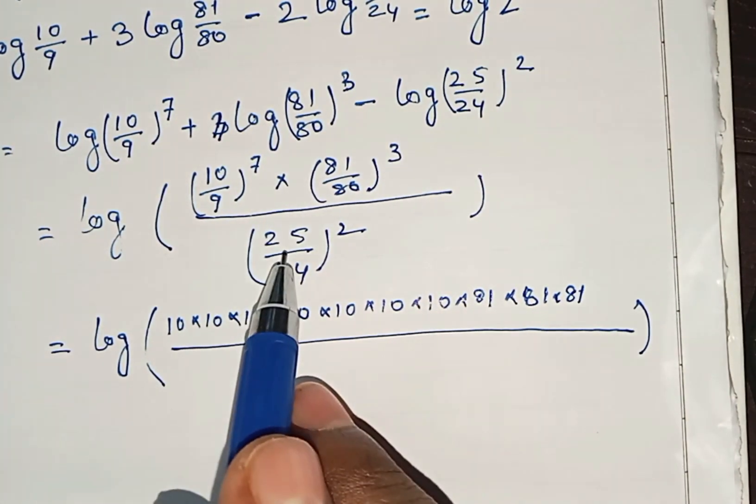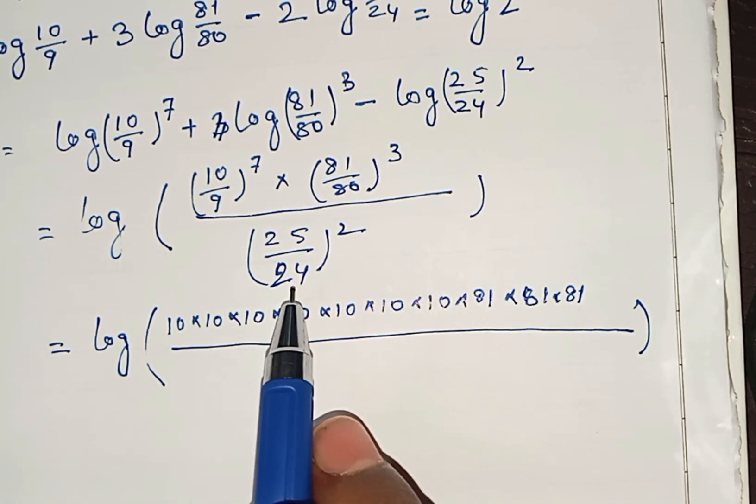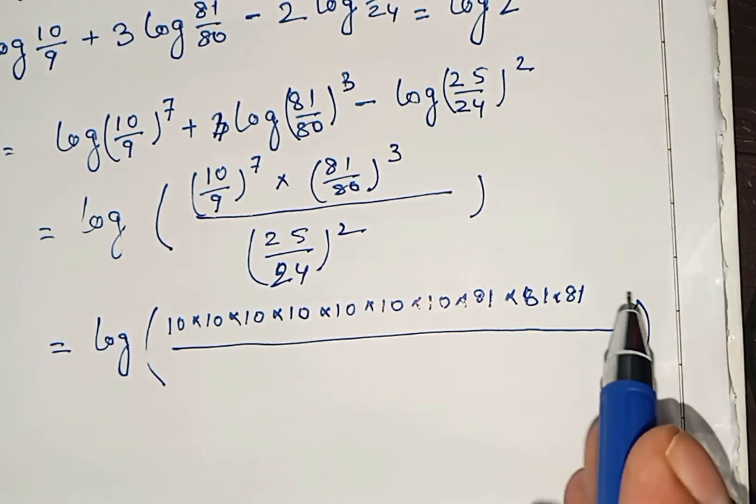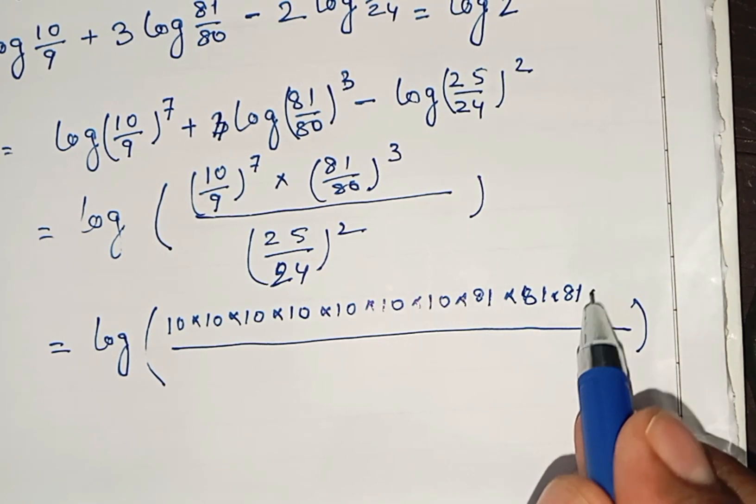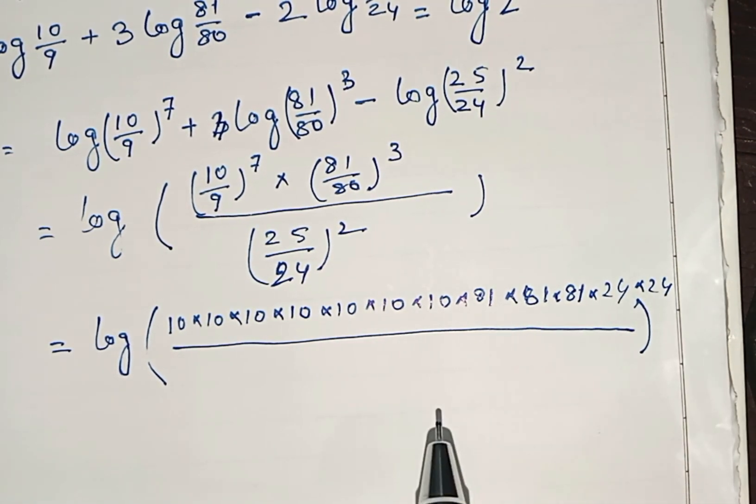Now at the denominator it is 25 two times and that is 24, so 24 will be at the numerator, so into 24 into 24.